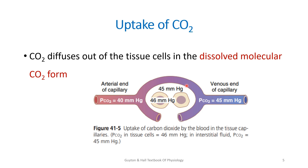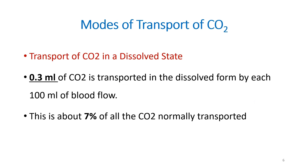The carbon dioxide which is taken up must be transported in the blood, and this occurs by three forms. One form of transport of carbon dioxide is in the dissolved form. About 0.3 ml per 100 ml of blood is transported in the dissolved form, and it is about 7% of the total carbon dioxide which is transported.